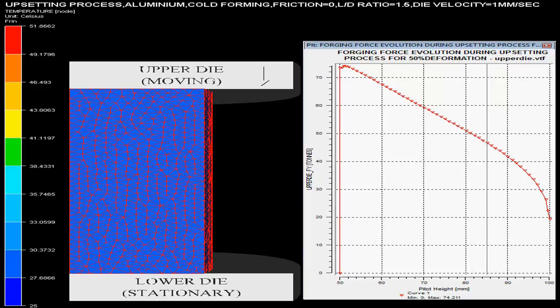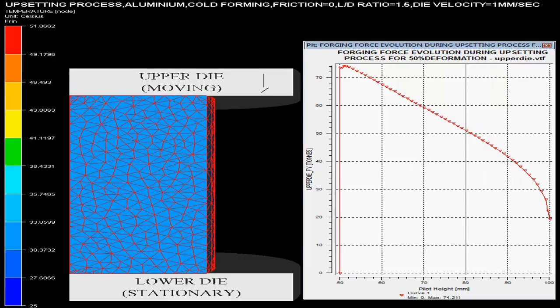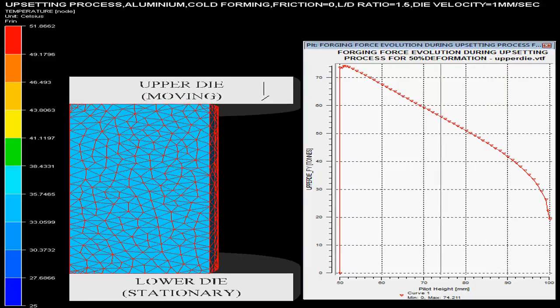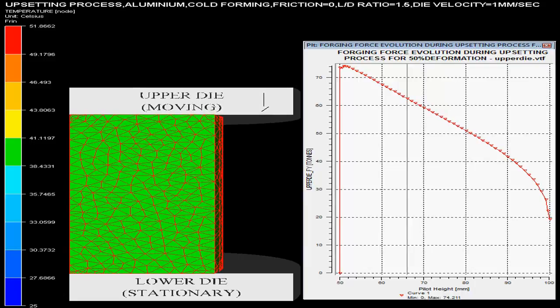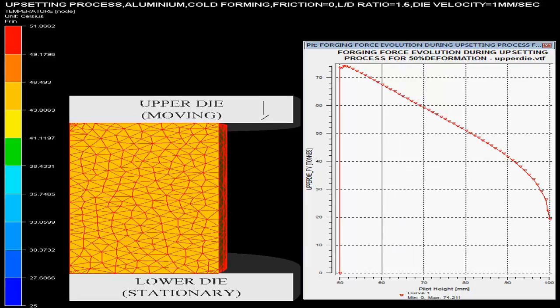Showing the forging force evolution during upsetting process for 50% deformation. The scale on left hand side describes the temperature in the billet changing during the process.